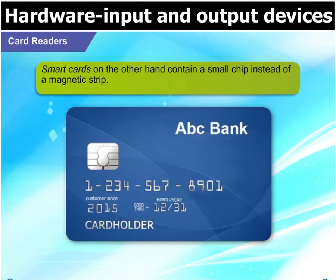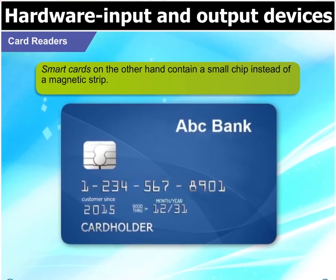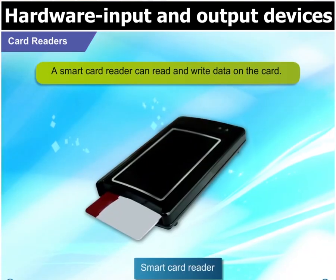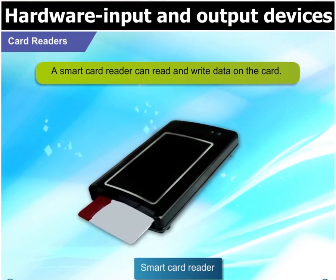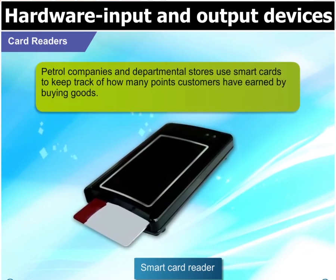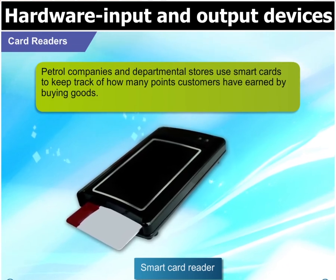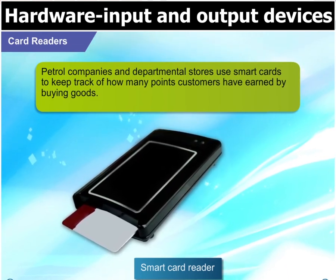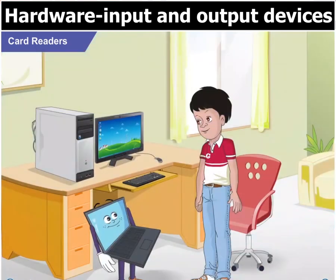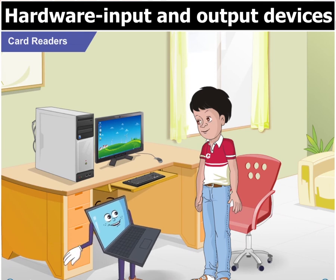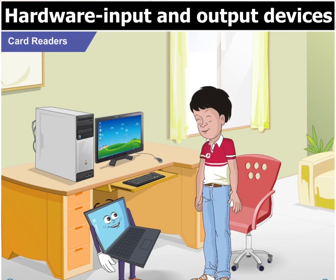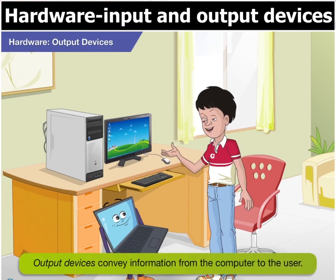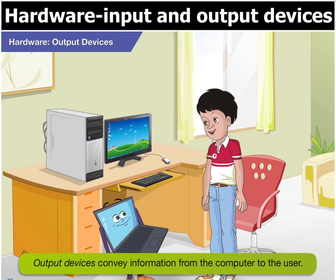Smart cards, on the other hand, contain a small chip instead of a magnetic strip. A smart card reader can read and write data on the card. Petrol companies and departmental stores use smart cards to keep track of how many points customers have earned by buying goods. That's about input devices. Output devices convey information from the computer to the user.